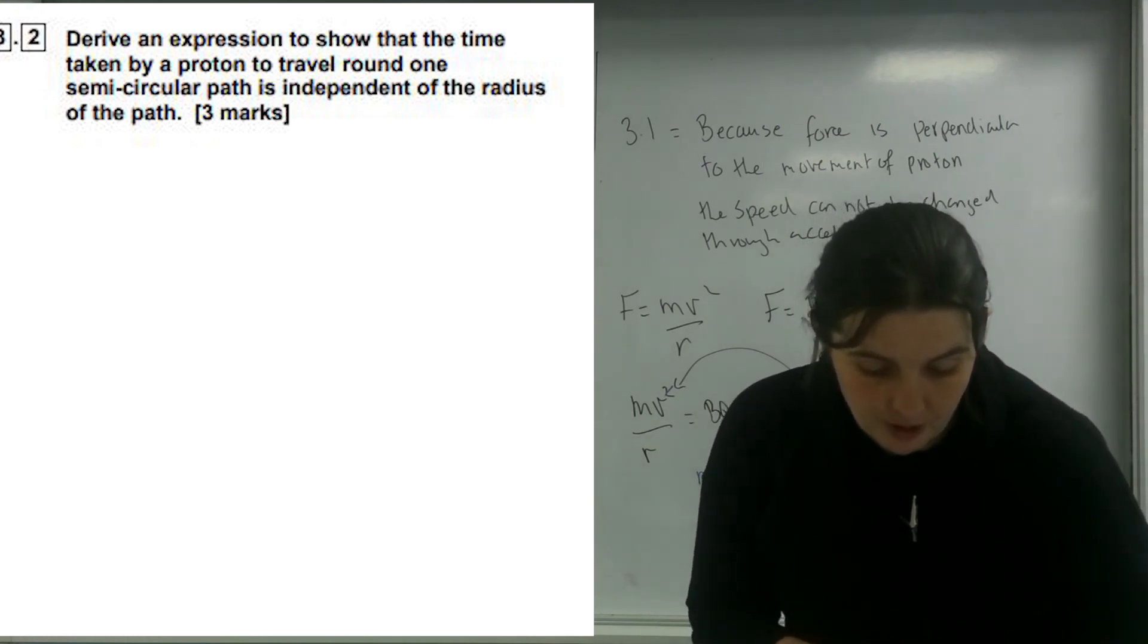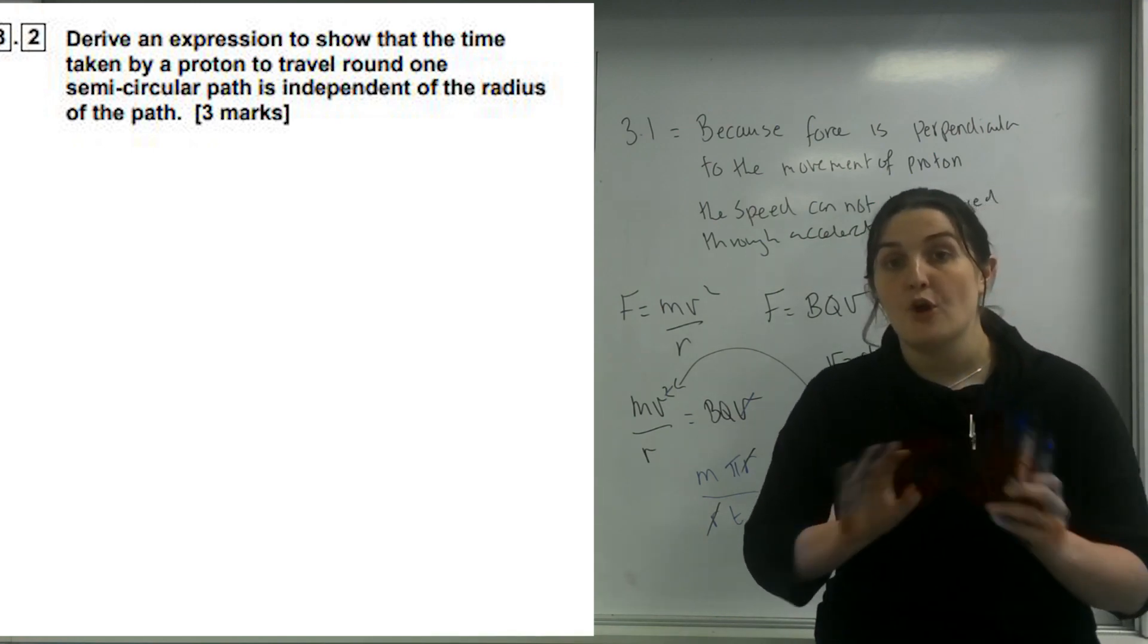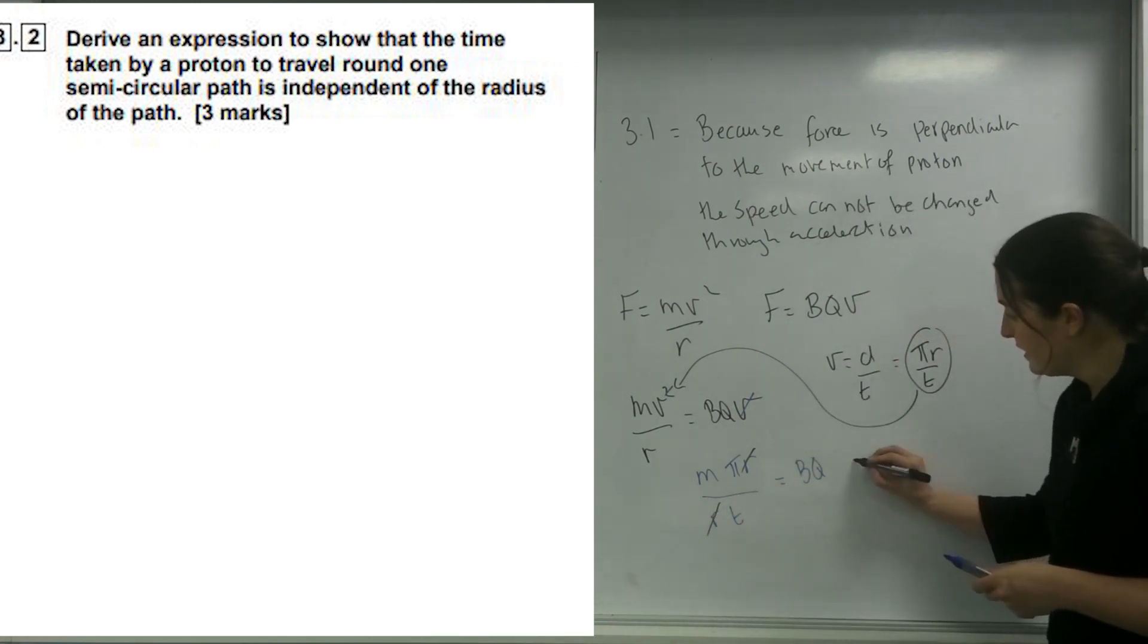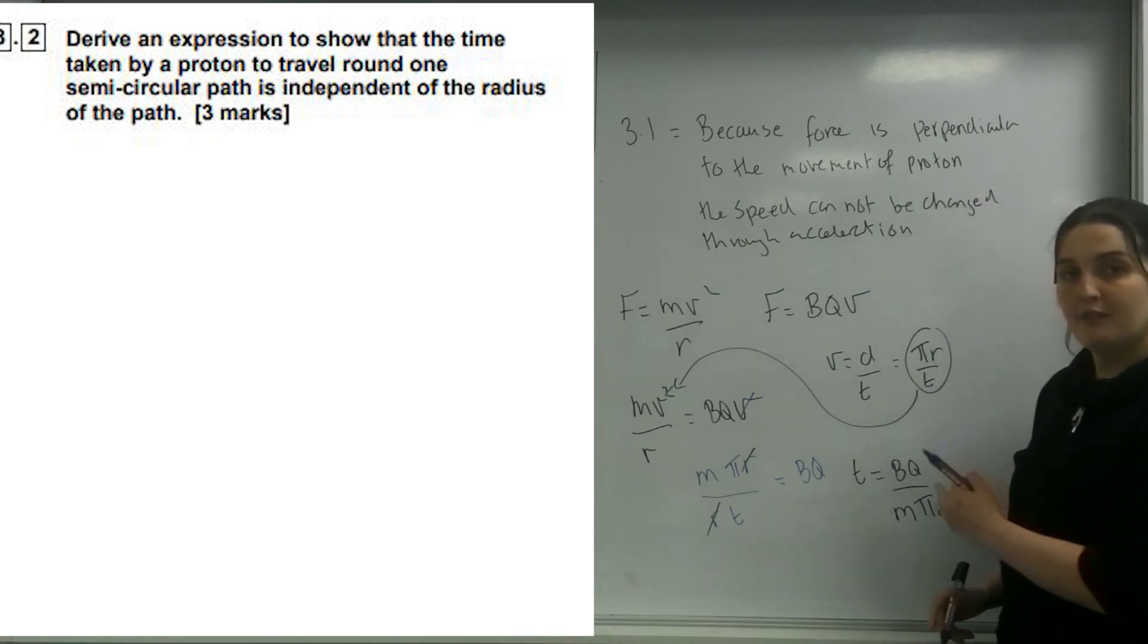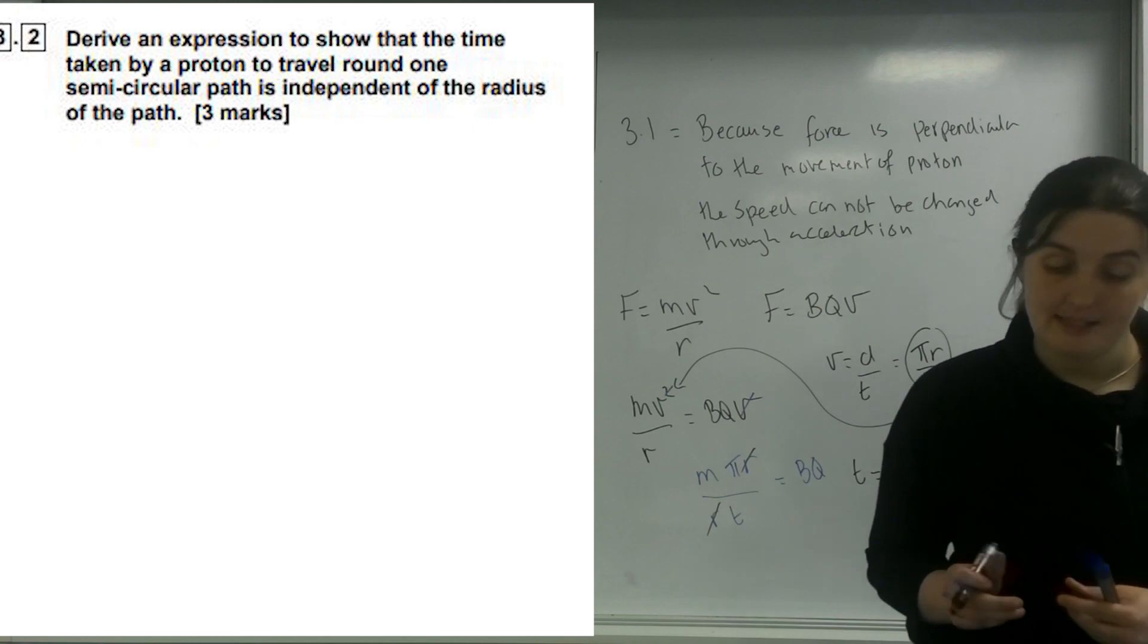To derive an equation to show that time taken is independent, and independent means it has no relationship to, as you can see because there is no r, I have time equals bq over m pi. Because I have this formula, there's no r in it, it is independent.